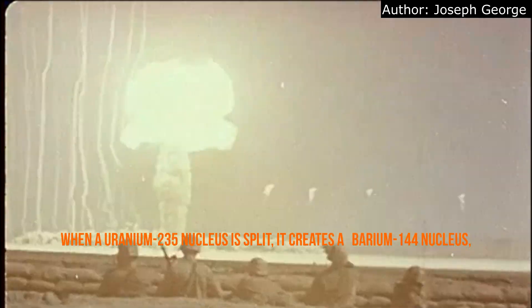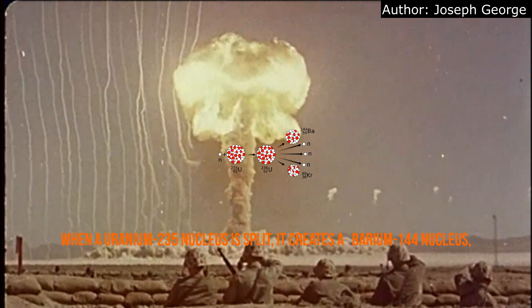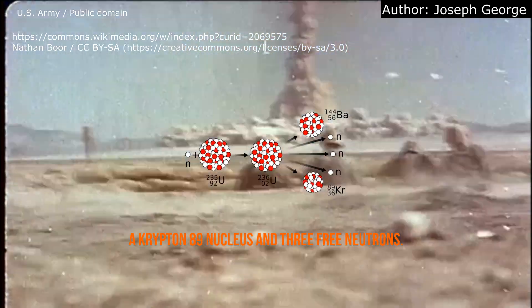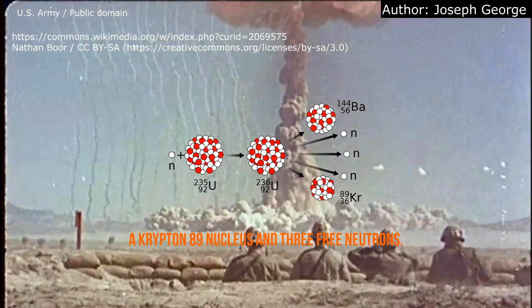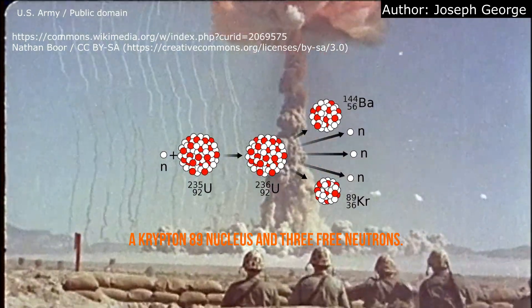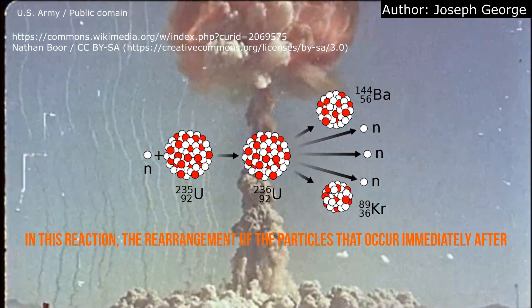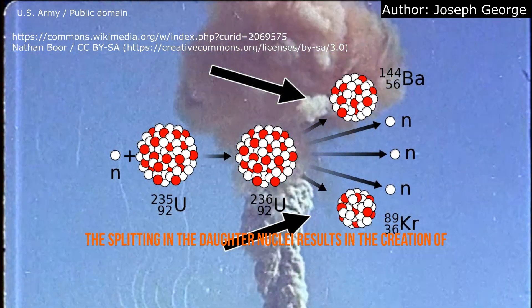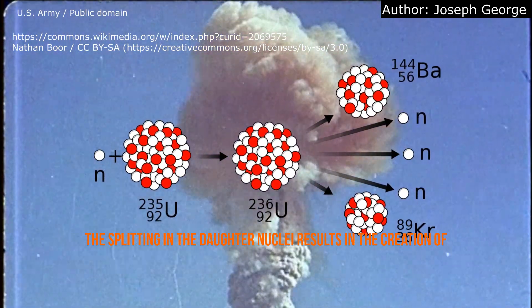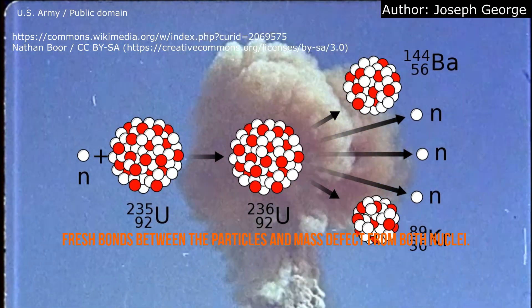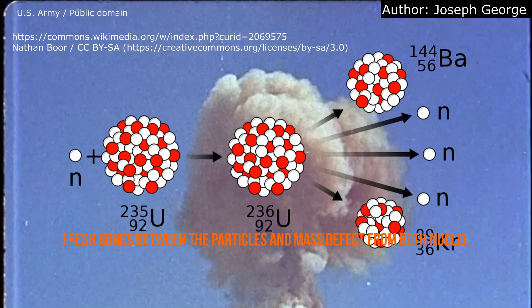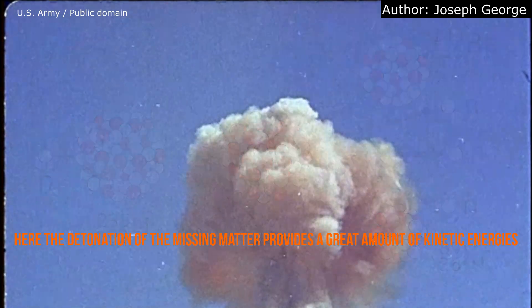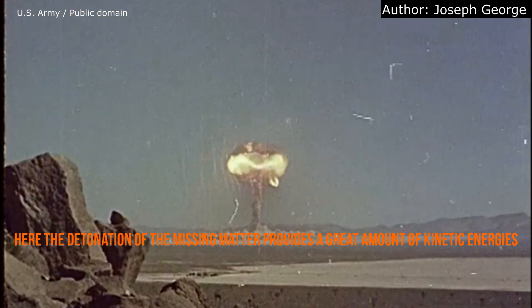When a uranium-235 nucleus is split, it creates a barium-144 nucleus, a krypton-89 nucleus, and three free neutrons. The rearrangement of particles that occurs immediately after the splitting in the daughter nuclei results in the creation of fresh bonds between the particles and a mass defect from both nuclei.